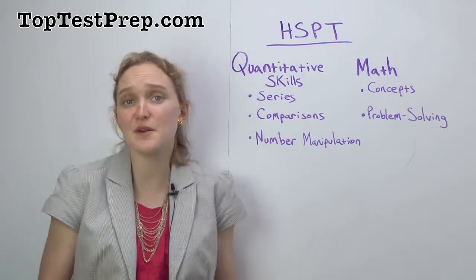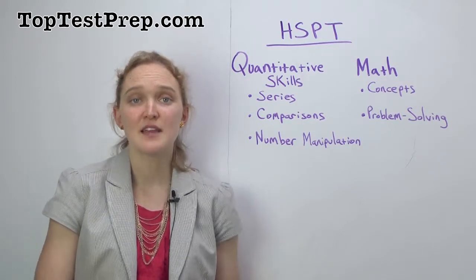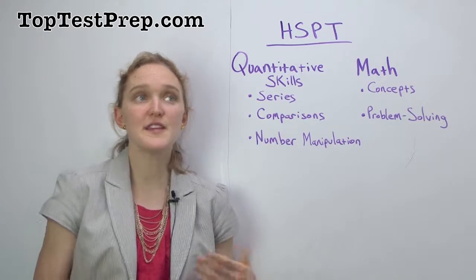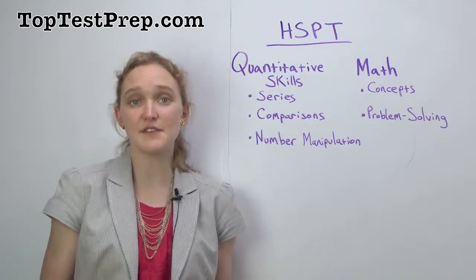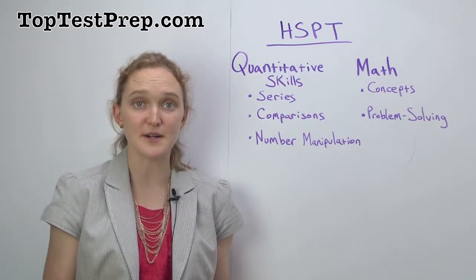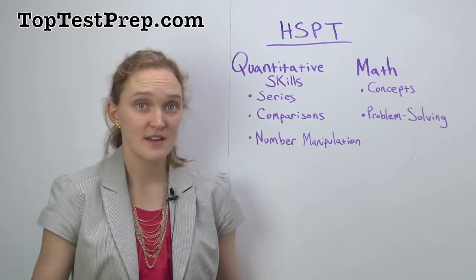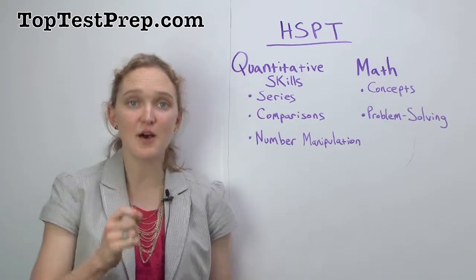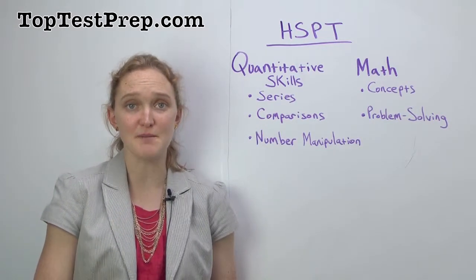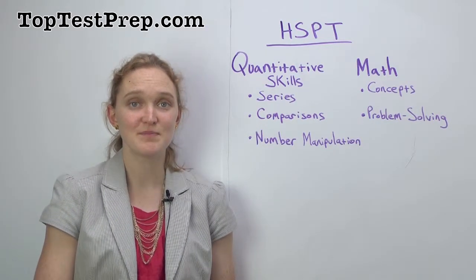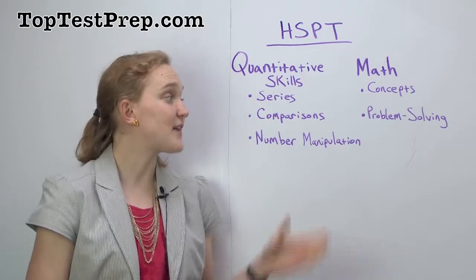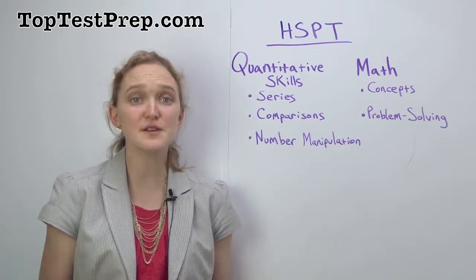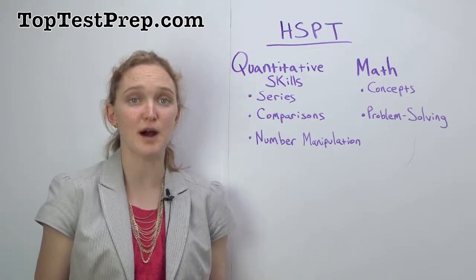Concepts — you either know them or you don't. An example of that type of question is: 59.74 rounded off to the nearest whole number is. You can't really prove that or solve it out with a pencil and paper; you just know it or you don't. Then finally we have problem solving questions, and those are going to be your typical word problems.